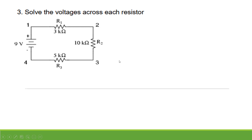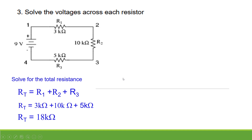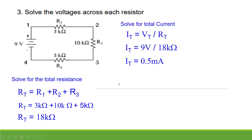Let us try to solve problem number three. We are asked to solve the voltages across each resistor. We have the following given as you can see in our image. Normally, we solve for the total resistance: 3 kΩ plus 10 kΩ plus 5 kΩ, giving a total resistance of 18 kΩ. Then we solve for the total current by dividing the total voltage by the total resistance, and we get 0.5 milliamperes.